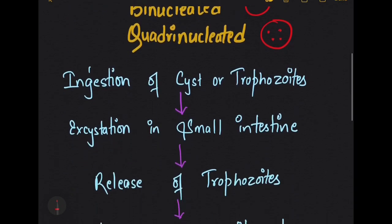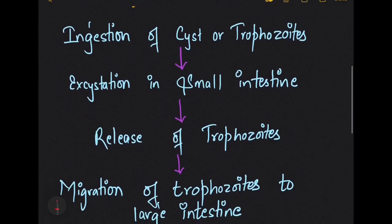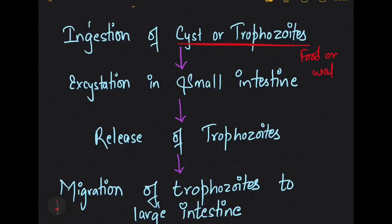Once the patient ingests the cysts or trophozoites of the parasite through contaminated food or water, they pass towards the alimentary canal. These cysts are not affected by the acidity of the stomach, so they finally pass towards the small intestine, where excystation occurs.